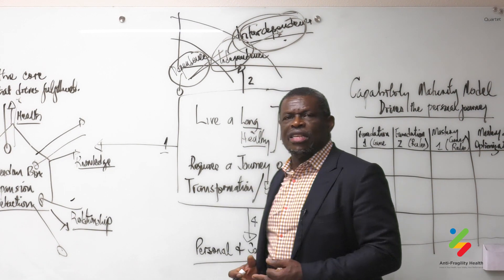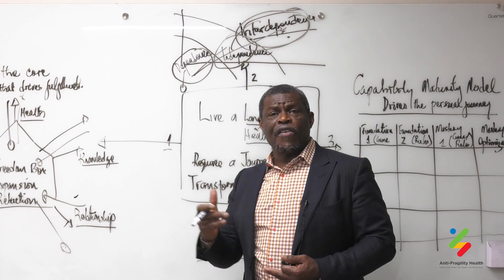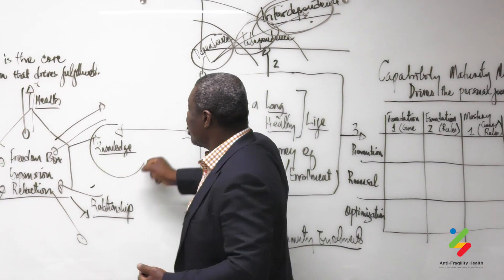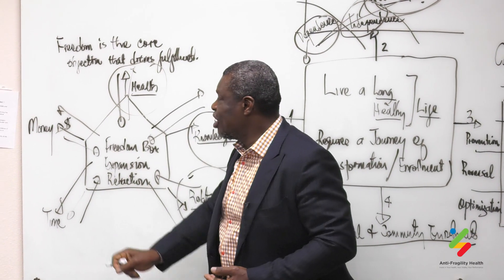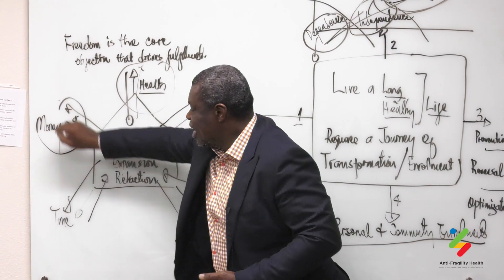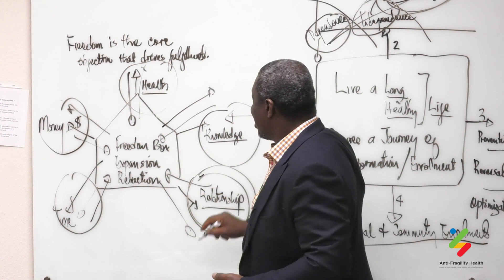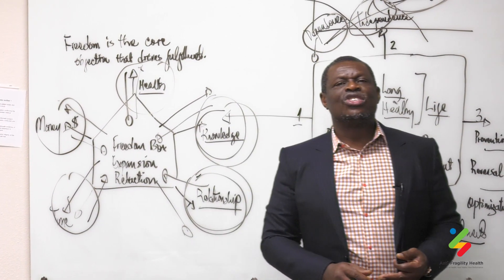Why? Because the reason why most people cannot get on a journey of health to interdependence, it's because they are constrained by these things. You're constrained by, I'm not healthy, I don't have the money, I don't have the time, I don't know people I can trust, I don't have the knowledge. Those are the constraints.